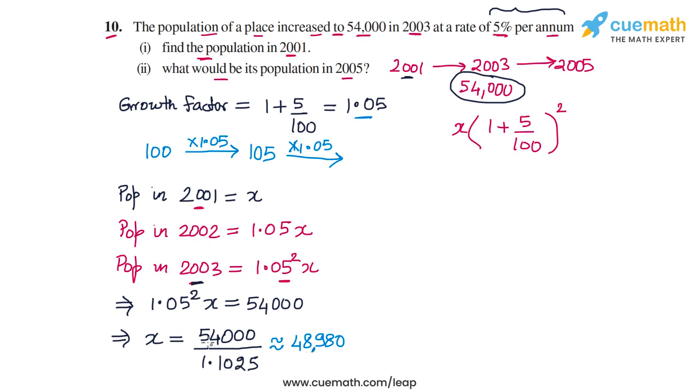this would be roughly equal to 48,980. And the other way to have done this calculation is instead of taking this as a decimal number 1.05, you could have converted it into a fraction and simplified. But both will give you the same answer. So the population in 2001 is roughly 48,980. I have rounded off the answer.